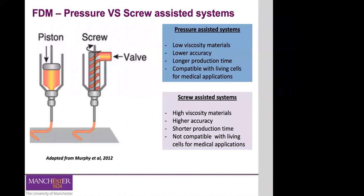There are some variations in terms of the fused deposition modeling system. The most common setup requires the use of a pre-filament — you need to fabricate a filament and then use a spool to feed into your print head. But that brings limitations because fabricating that filament impacts the fabrication time and gives you less flexibility in material development. To overcome that, different extrusion mechanisms have been developed. Nowadays you can use two systems: one that is piston-driven or pressure-assisted, and another that is a screw-assisted system.